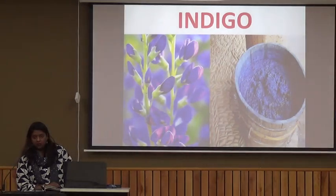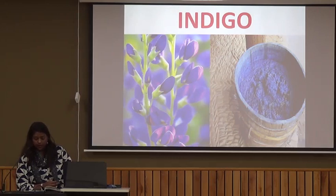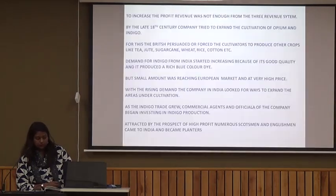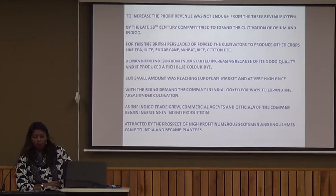After that, the British wanted to think of more ways to gain profit from India. In pursuit of that, they introduced Indigo — a blue dye. As you can see on the board, Indigo is a blue dye, and nowadays we have clothes made from Indigo dye which are a rich blue in color. Indigo was introduced to increase profit since revenue was not enough from the three revenue systems. By the late 18th century, the company tried to expand the cultivation of opium and Indigo.